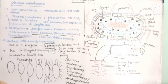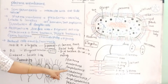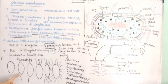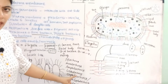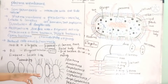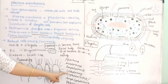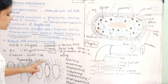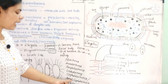Flagella are classified based on number and position. When flagella are absent, the condition is called atrichous — 'a' means absent, 'trichous' means flagella. One flagellum at one end is monotrichous. Two flagella at two ends is amphitrichous — 'amphi' means both sides. A bunch of flagella at one end is lophotrichous. A bunch of flagella at both ends is called cephalotrichous or amphi-lophotrichous.